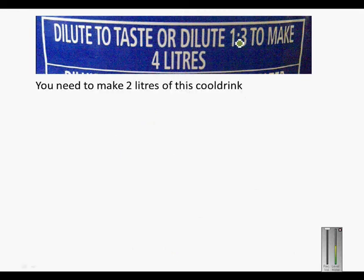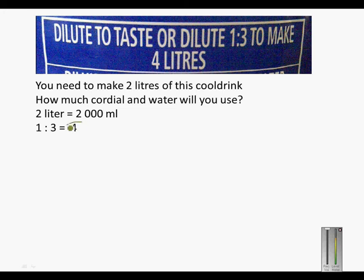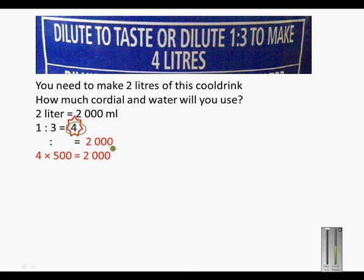Again with the same label: you need to make 2 liters of this specific cold drink. So how much cordial and water will you use? 2 liters is equal to 2000 milliliters. Our ratio is 1 to 3, which is 4 parts. So when we're considering the total cool drink, we look at this 4. So 4 is represented by 2000. And how do we get from 4 to 2000?